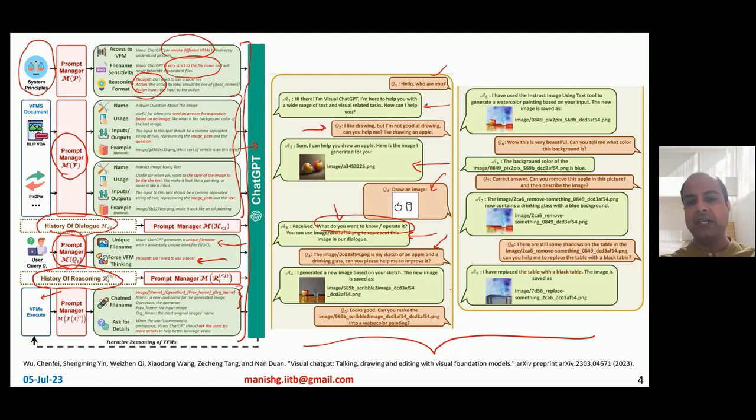Now at this point a user may give more commands like convert it to watercolor painting and that is what the system does. User may ask what is the background color, system says blue. User may say I don't like the apple, remove the apple. Well, the system removes the apple, but then you see that the apple's image reflection is still there on the table. User may dislike it and say replace it with a black table, I don't like the reflection and that is what the Visual ChatGPT model does as well. That's a nice multimodal dialogue going on between the system and the user.